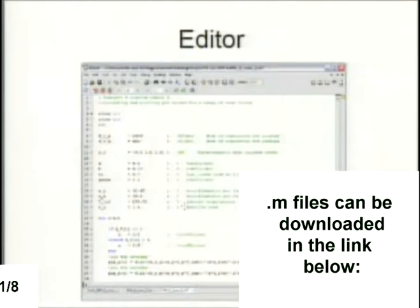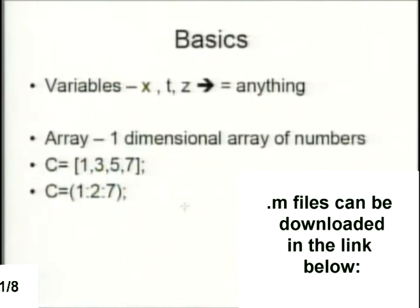To start with the basics, we're dealing with variables. Variables can be anything — X, T, Z, whatever you want to call them. An array is a vector — a one-dimensional array of numbers. So an example would be C equals a set of numbers. If you wanted to create this in MATLAB without typing all the numbers, you could do something like 1 colon 2 colon 7, which tells MATLAB to start at 1 and progress by 2 to 7. It's a way to create arrays quickly without typing a bunch of numbers.